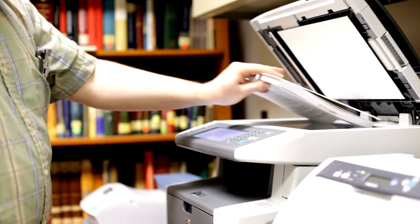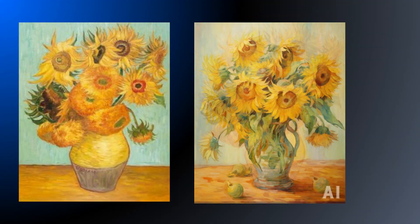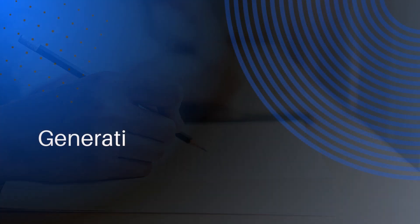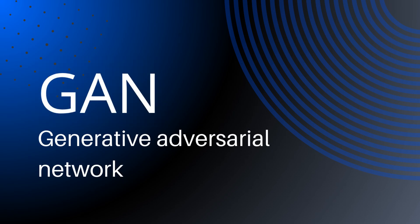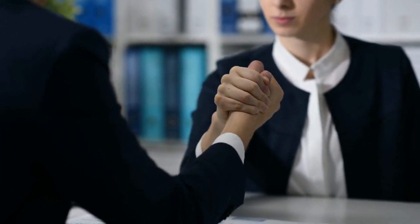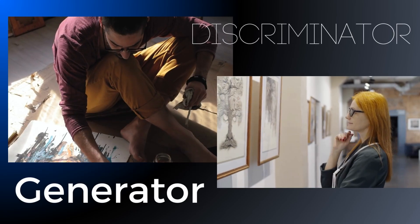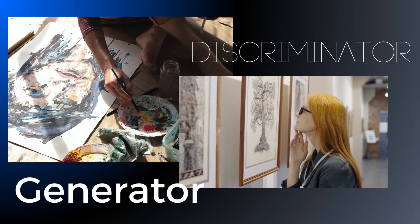But we don't just want our AI artist to copy the masters — we want the artist to be creative and make something new just for us. In our art school metaphor, the final exam is like a generative adversarial network, or GAN. This is the showdown between two parts of the AI: the generator, creating the art, and the discriminator, critiquing it.